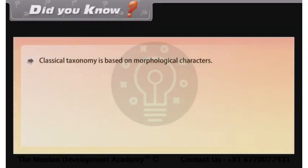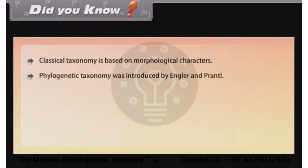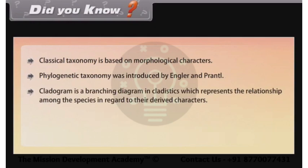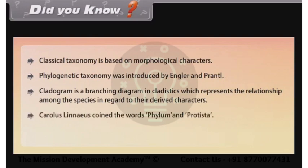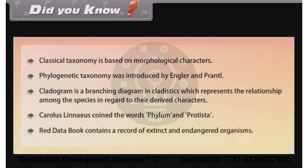Did you know? Classical taxonomy is based on morphological characters. Phylogenetic taxonomy was introduced by Engler and Prantl. A cladogram is a branching diagram in cladistics which represents the relationship among species in regard to their derived characters. Carolus Linnaeus coined the words phylum and Protista. The Red Data Book contains a record of extinct and endangered organisms.